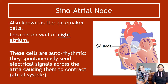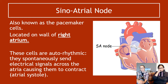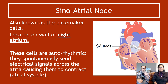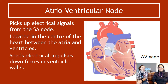The sinoatrial node, or SA node, is also known as the pacemaker cells — they set the pace for your heart. It is located on the wall of the right atrium, not the left. These cells are auto-rhythmic, meaning they spontaneously send electrical signals across the atria, causing them to contract. That is the purpose of the SA node — to initiate atrial contraction.